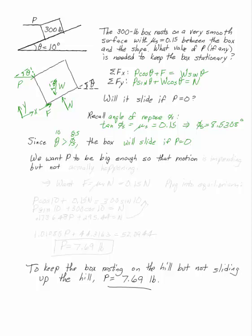So, how big does p have to be to keep it there? We want p to be big enough so that motion is impending but not actually happening. So, what does that mean? We want to know when f equals mu s times n. Mu s, of course, is 0.15. I want to plug this into my equilibrium.